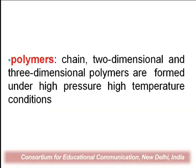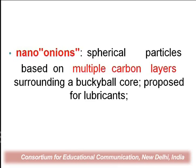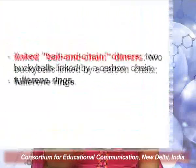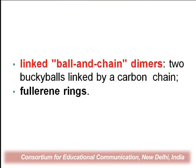Fullerene can also form polymers — chain, two-dimensional, or three-dimensional polymers formed under high pressure and high temperature conditions. Nano onions are spherical particles with multiple carbon layers, like an onion, surrounded by bucky ball cores. These nano onions are used as lubricants. Another form is linked ball-and-chain dimers, where two bucky balls are linked by a carbon chain to form carbon rings.